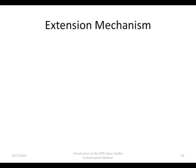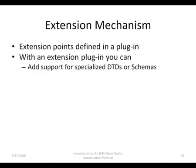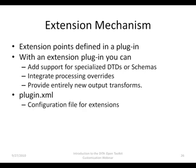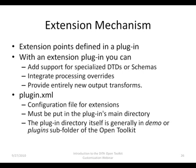Now let's have a look at how the extension mechanism works. Customization of the Open Toolkit must be done through extension points defined in a plugin. Plugins may do a number of things, such as adding support for specialized DTDs or schemas, integrating processing overrides, or providing entirely new output transforms. Extensions are integrated using a file named plugin.xml — a file with the configuration settings for the extensions. It must be put in the plugin's main directory, which is generally located within the demo or plugin subfolder of the Open Toolkit installation folder.